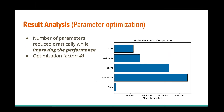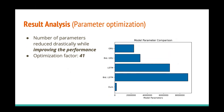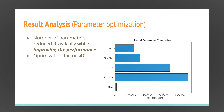Here is the comparison of parameters across different models. My experimental model parameters are way better than the other models. Using GRU as the baseline, our optimization factor is 41 — meaning we optimized our model by a factor of 41 compared to the baseline. This is a pretty good result in my experiment.